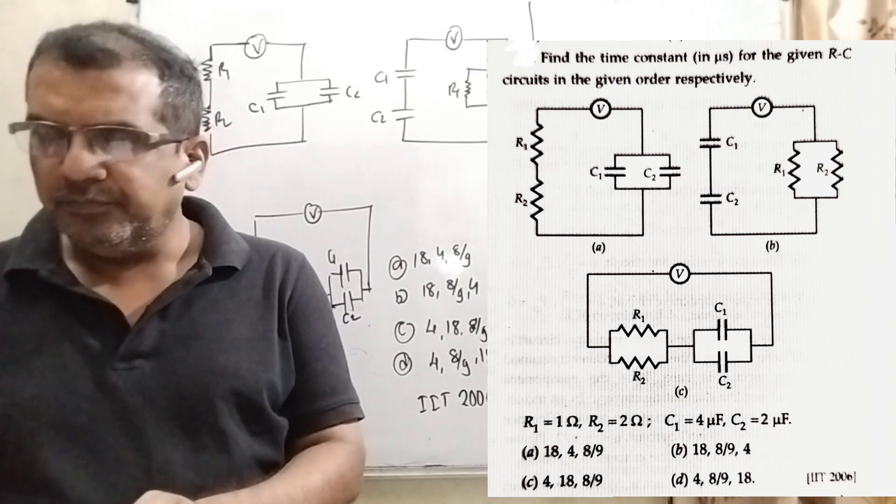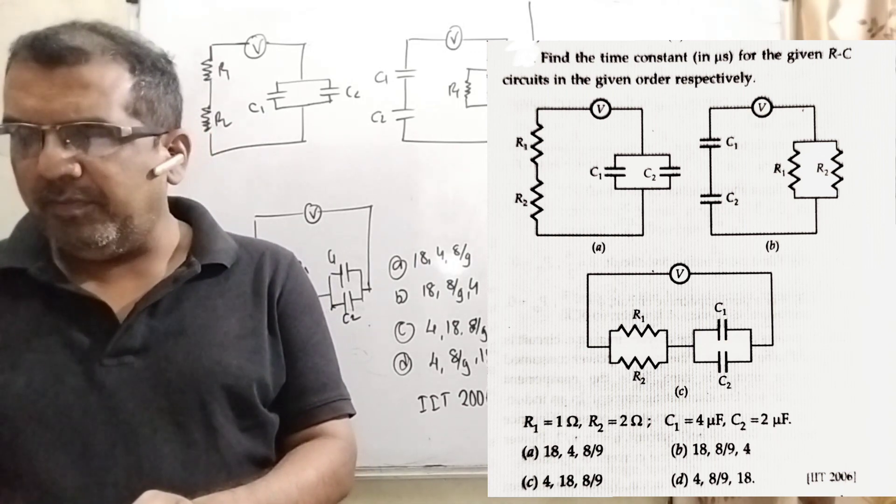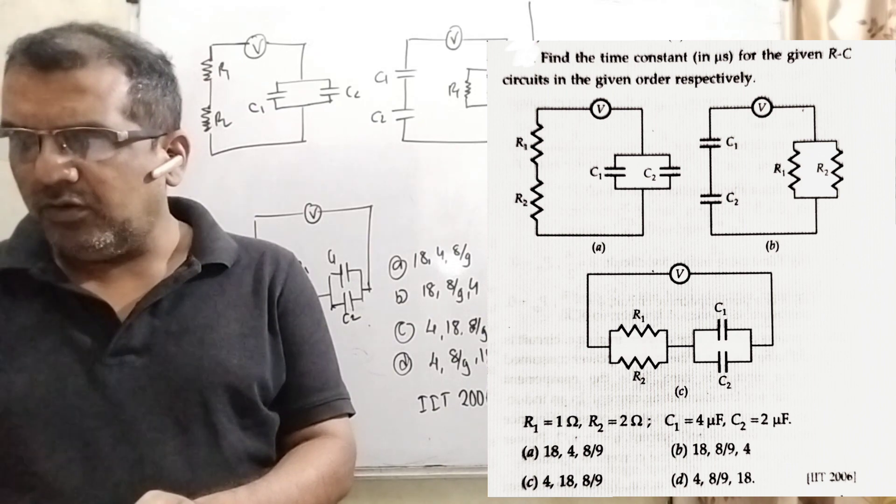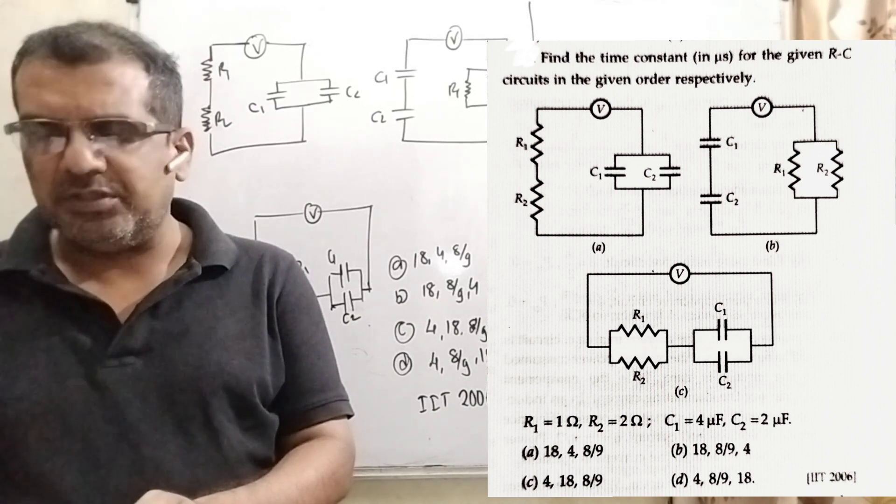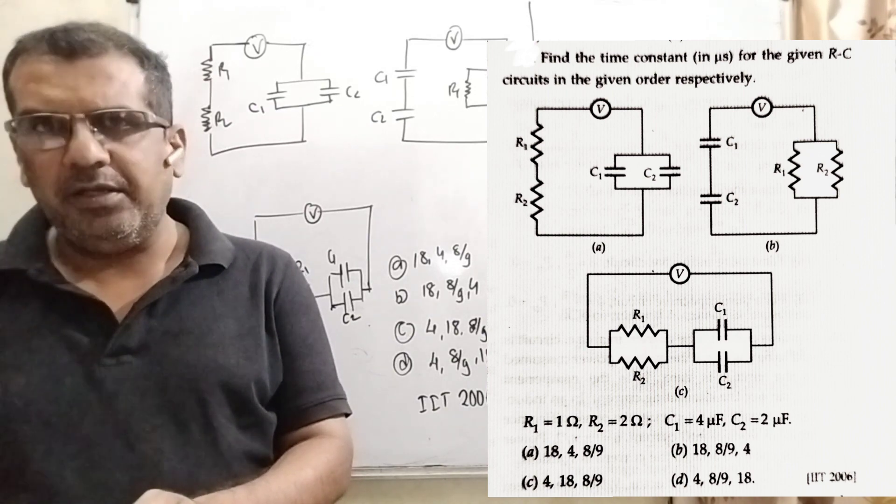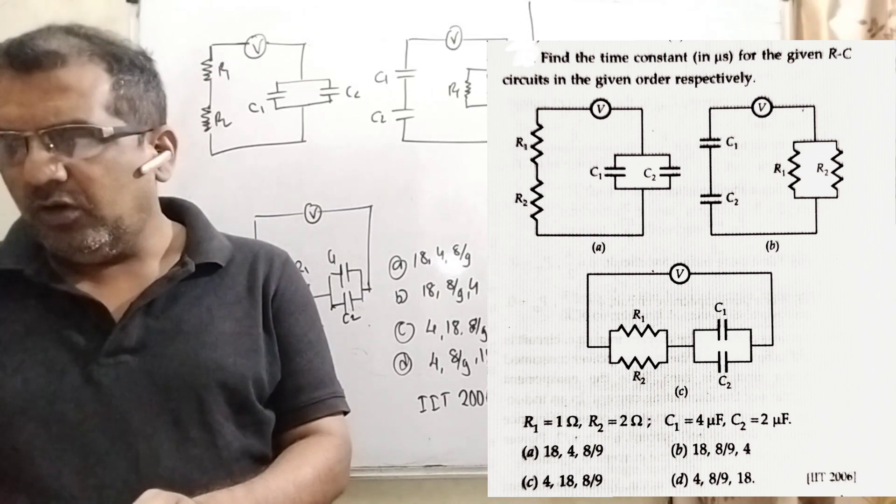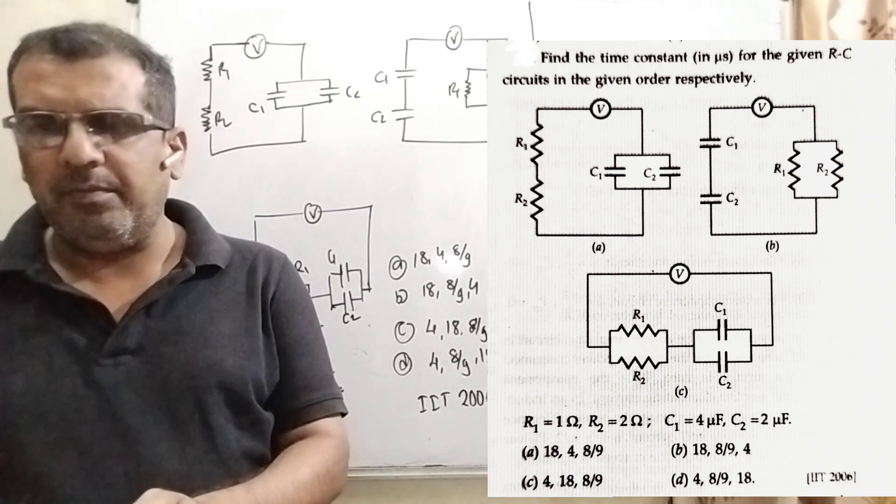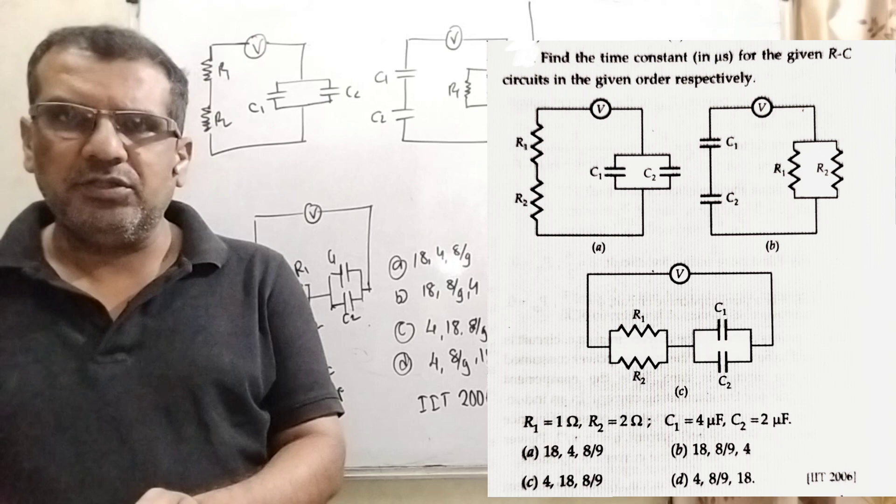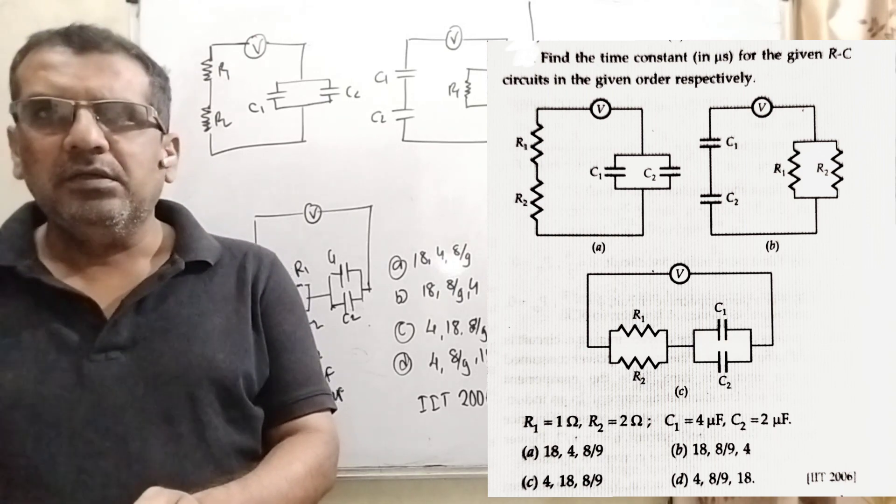Option A: 18, 4, 8 by 9. Option B: 18, 8 by 9, 4. Option C: 4, 18, 8 by 9. Option D: 4, 8 by 9, 18. And this question is asked IIT 2006.